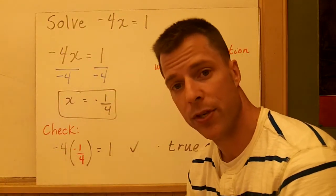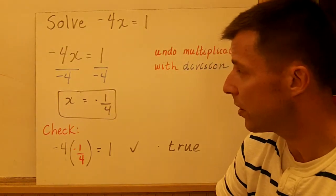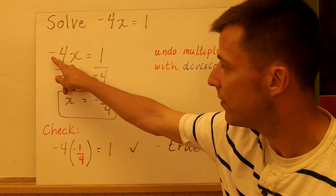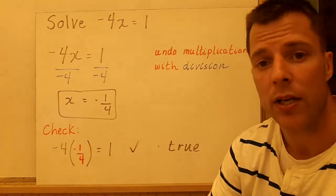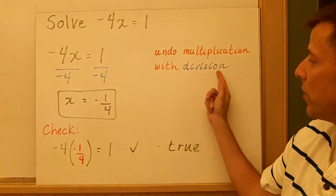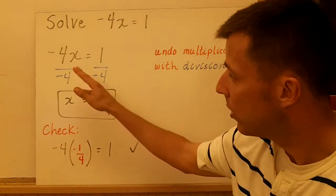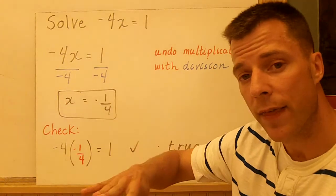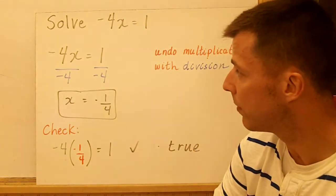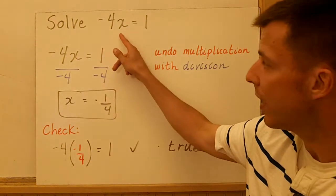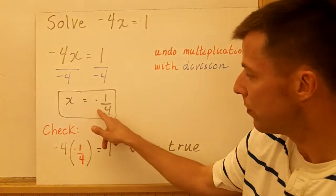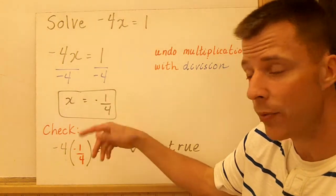In example 2, we're going to look at another one-step equation. You don't see an operation here, but you have negative 4x equals 1. So the operation is multiplication. So to undo multiplication, we simply divide. So when you talk about equations, divide both sides by the same number. You might be able to use mental math: negative 4 times what number is 1? Well, the answer would be negative 1/4.